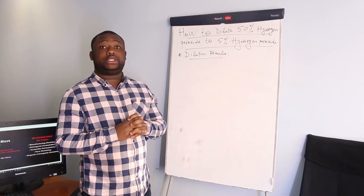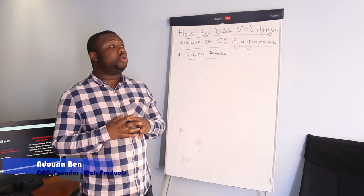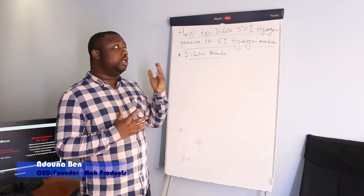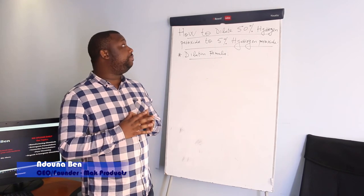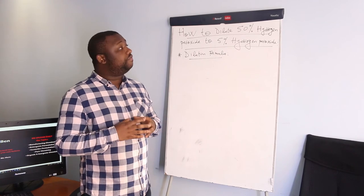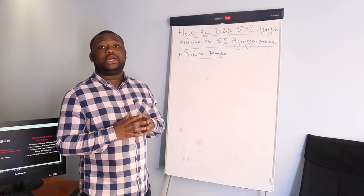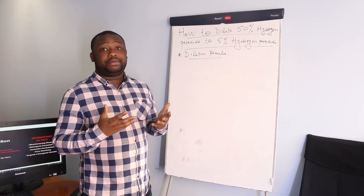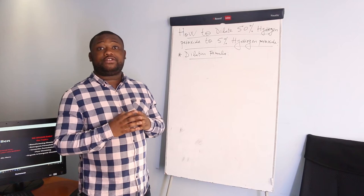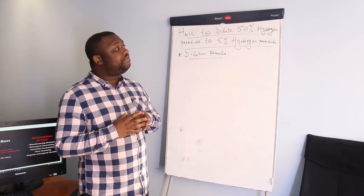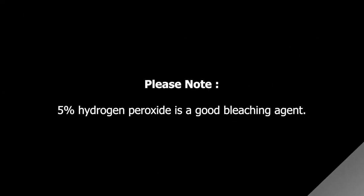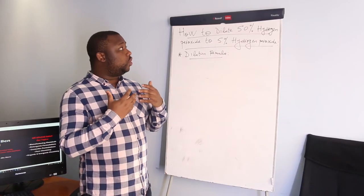Welcome back to the channel. On this video I'll show you how you can dilute 50% hydrogen peroxide to 5% hydrogen peroxide. We get 50% from the supplier, and 5% hydrogen peroxide is a very good bleach agent.